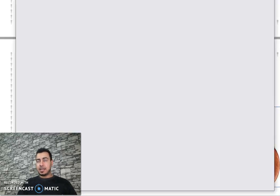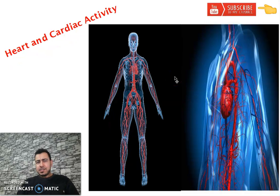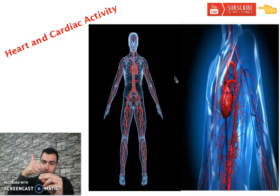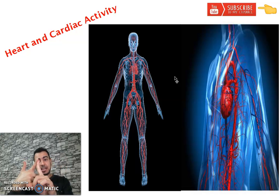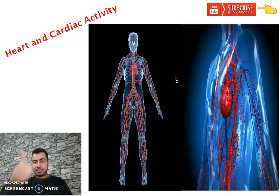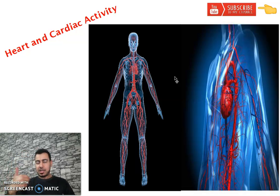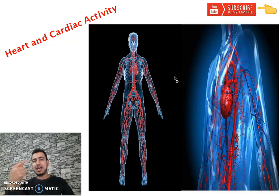First of all, you know that blood absorbs nutrients from the small intestine, and the blood takes oxygen gas from the lungs, from the alveoli. So blood carries oxygen and nutrients - to distribute them to all body organs, ليوزعن على كل أنحاء الجسم.